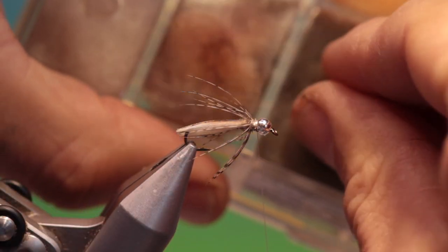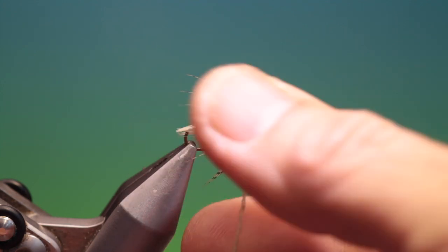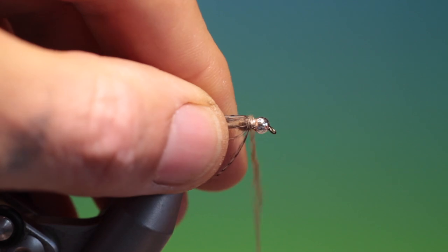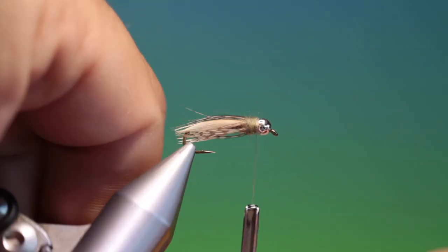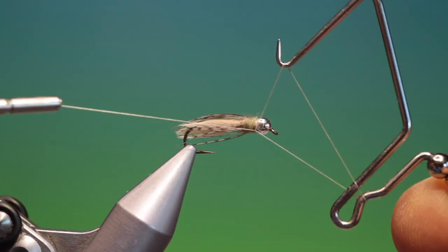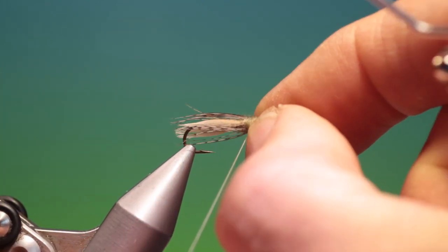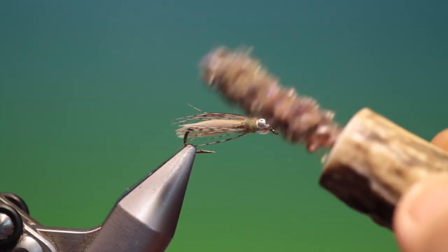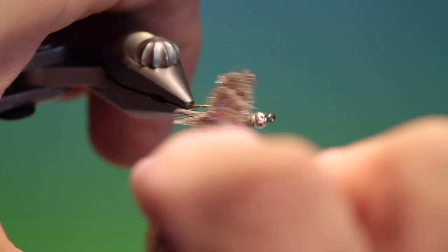Now we need some olive grey superfine. Again just a little bit. We don't want this too tight. Because we're going to brush it out over the partridge hackle. I want to hold that partridge hackle down. That's good. Take our whip finisher. One. Two. Tighten it up. Remove that. And then we take a dubbing brush. And we just want to pull the fibres very gently out over the partridge hackle.